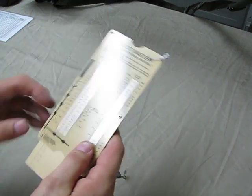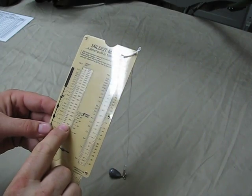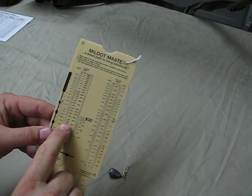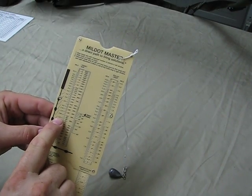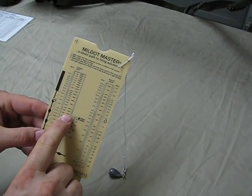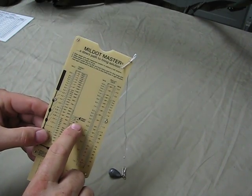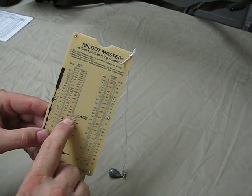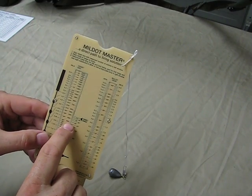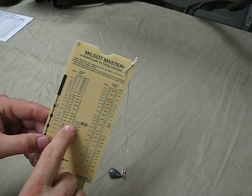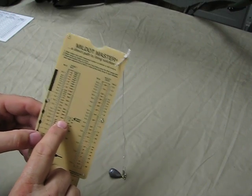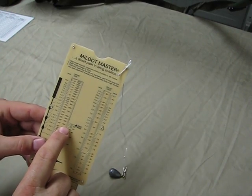Let's say that same object, we're shooting at a 30 degree incline. Flip it over on here, we got our 36 inch target, we measured it at 2 mils, it's 500 yards away. But we're shooting at a 30 degree incline, so right here, 30 degree incline, our ballistic distance is 435 yards. So you would set your scope up for a 435 yard shot.